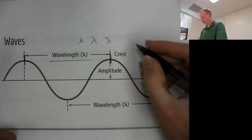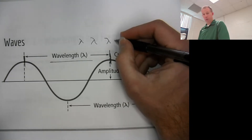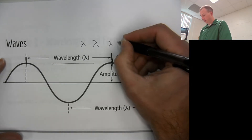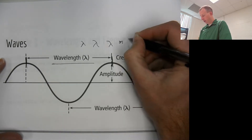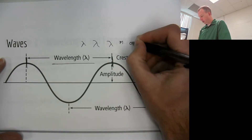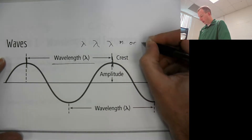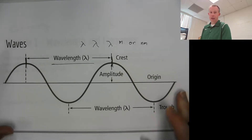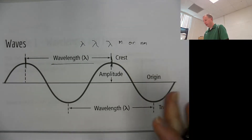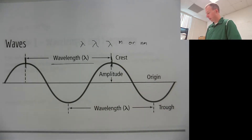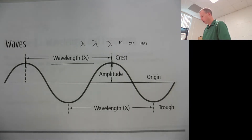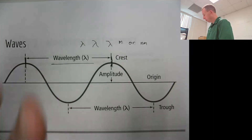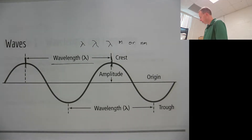Wavelength is just the distance between two peaks, valleys, or troughs on a wave. It doesn't matter whether you're measuring from up here or down here — that's just the wavelength of a wave. Wavelength is usually measured in one of two possible units: meters or nanometers. We'll talk about the nanometers conversion a little bit later.